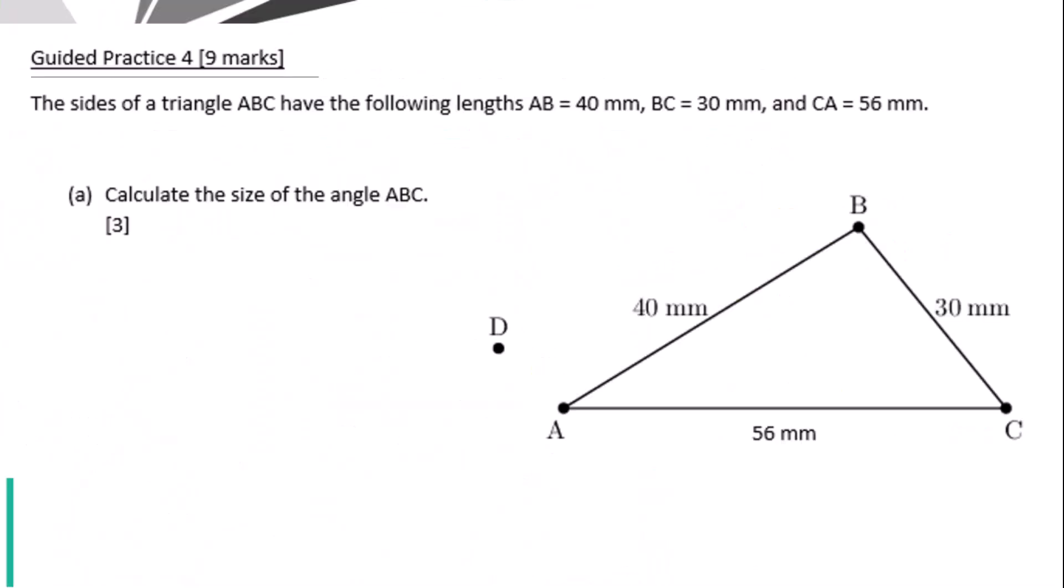Let's go to guided practice 4. The sides of a triangle ABC have the following lengths: AB equals 40 millimeters, BC equals 30 millimeters, and CA equals 56 millimeters. Calculate the size of the angle ABC.